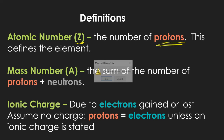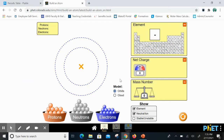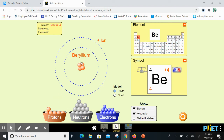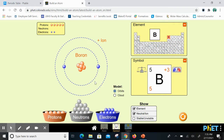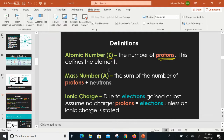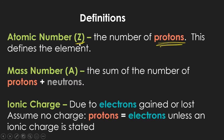The atomic number is the number of protons, and that defines the element. As you add protons, the element changes: hydrogen, helium, lithium, beryllium. Changing neutrons or electrons does not change the element — it's still boron whether you add neutrons or electrons. Protons alone define the element; you can have as many neutrons or electrons as you want without changing what element it is.